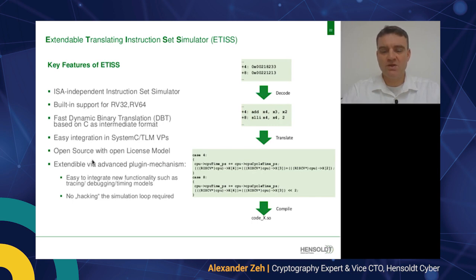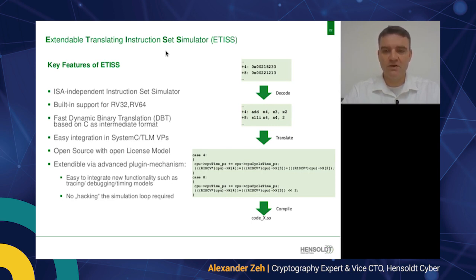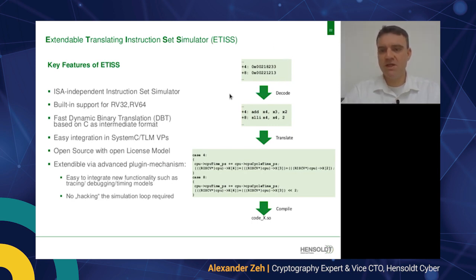For this we used an instruction set simulator called ETIS — Extensible Translating Instruction Set Simulator — developed at the Technical University of Munich. Key features include ISA-independent simulation, support for 32-bit and 64-bit architectures, fast dynamic translation using C as an intermediate format, easy integration of SystemC or transaction-level modeling for virtual prototypes, and an advanced plug-in mechanism for tracing, debugging, or timing models. The machine code is decoded into assembly, translated into C code, which then runs on the host machine to simulate instructions.